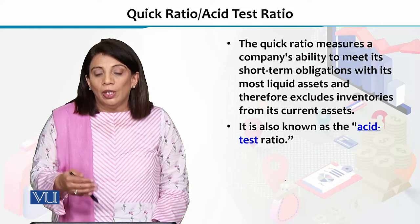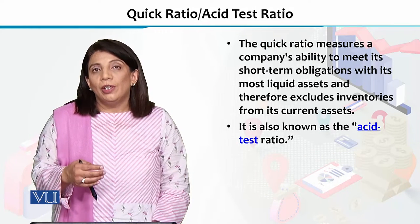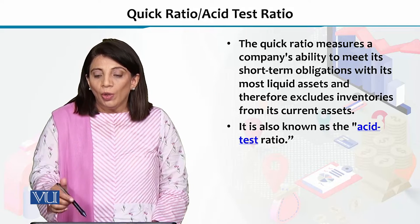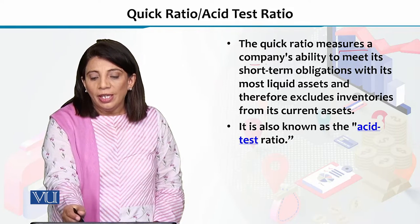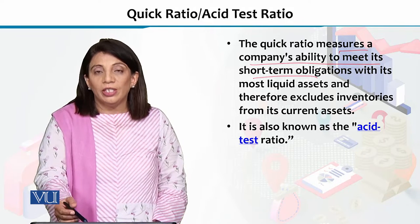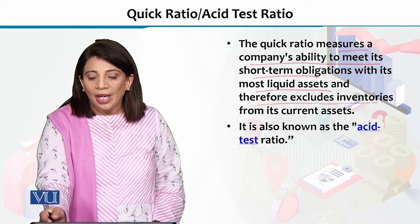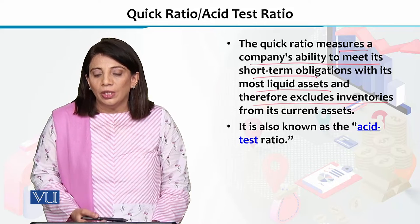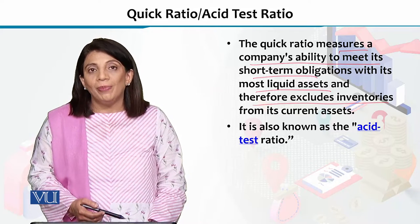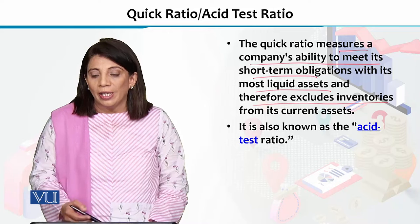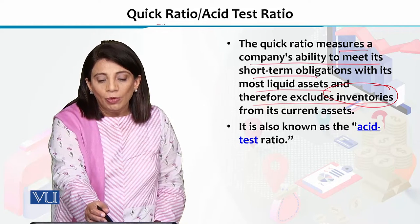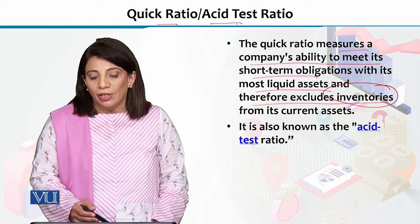The second type of liquidity ratio is called the quick ratio, or the acid test ratio. The quick ratio basically measures the company's ability to meet its short-term obligations with its most liquid assets, and therefore it excludes the inventories from current assets. This is why it is called the quick ratio or the acid test ratio.